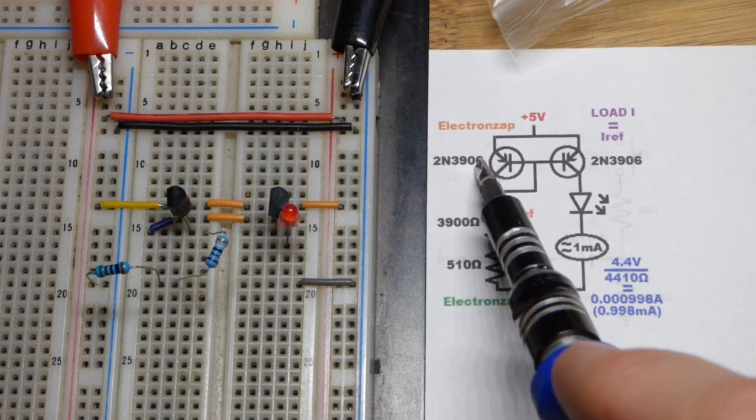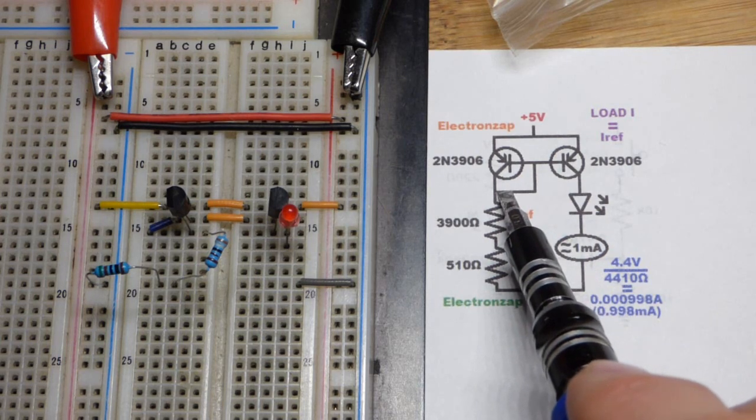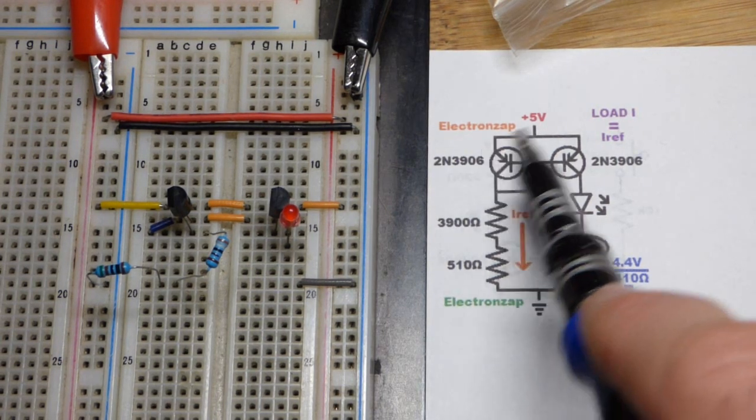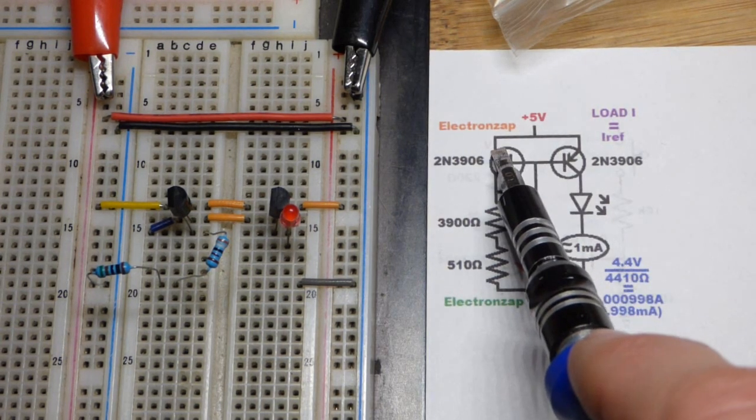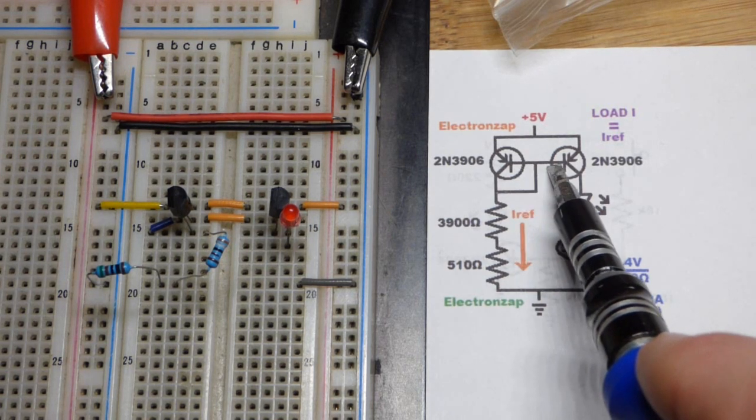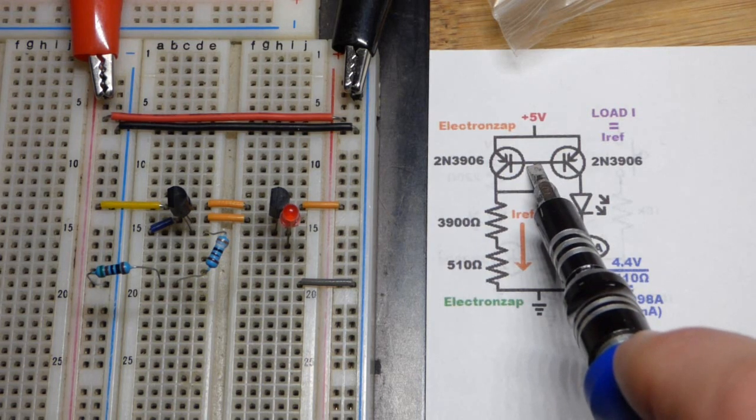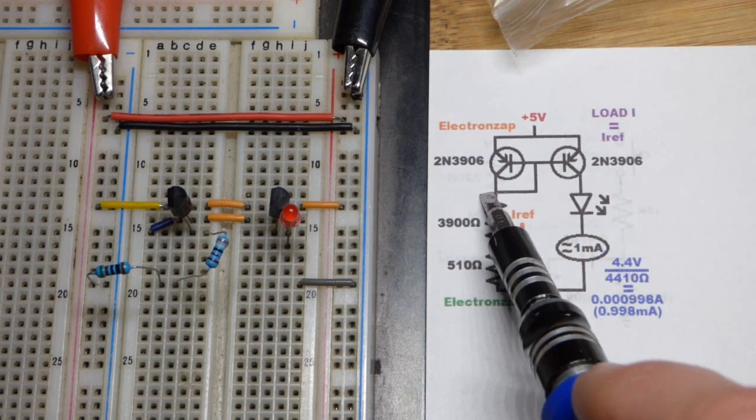In this video we have a couple PNP bipolar junction transistors wired as a current mirror. We have the emitters to the positive supply, and that means the base here is going to be about 0.6 volts less on both of them.